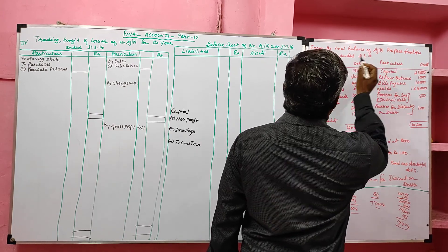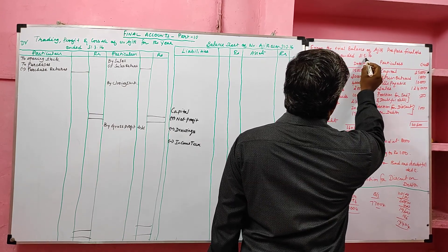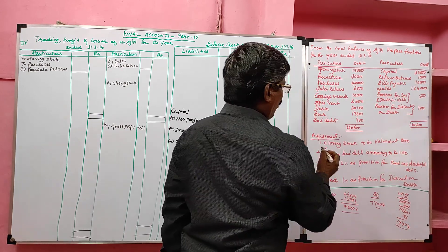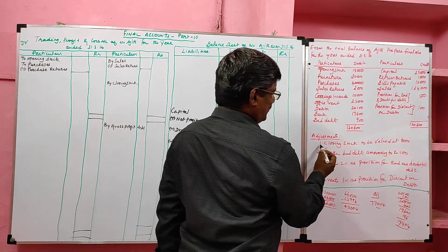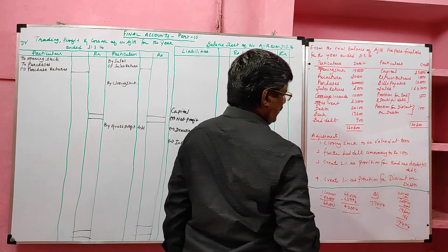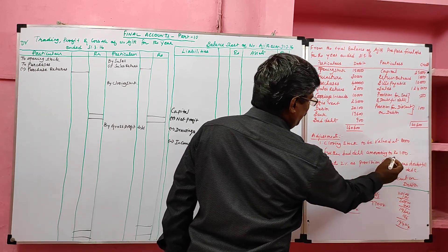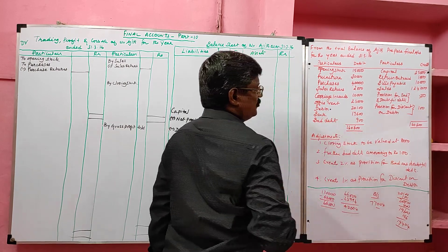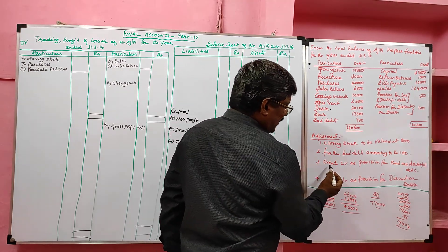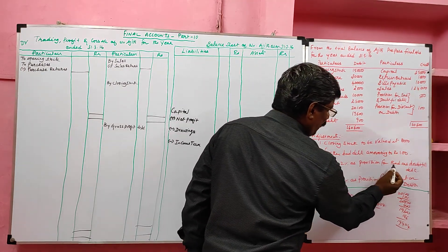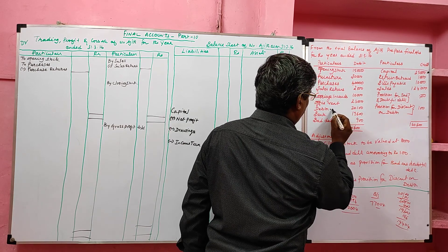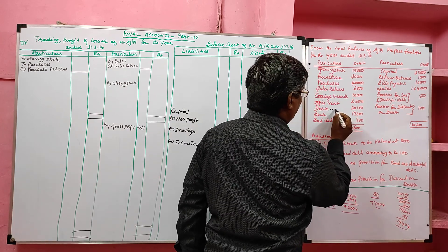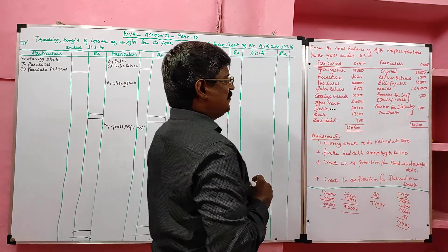From the following trial balance of Ajit, prepare final accounts for the year ended 31st March 2016. Debit balances and credit balances are given, along with some adjustments. The first adjustment is closing stock to be valued at 8,000. The second adjustment is further bad debts amounting to 100 rupees — this new bad debts will impact the debtor. Then create 2% as provision for bad and doubtful debts, and 1% as provision for discount on debtor. So we have three adjustments for debtor.